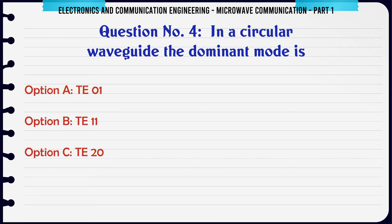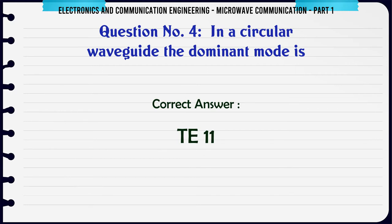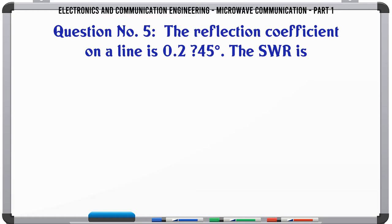In a circular waveguide the dominant mode is: A. TE01, B. TE11, C. TE20, D. TE21. The correct answer is TE11.